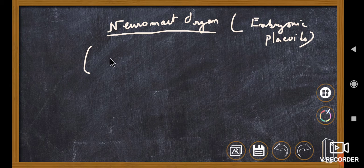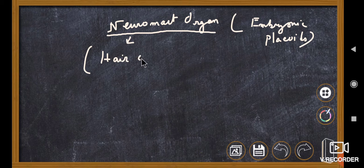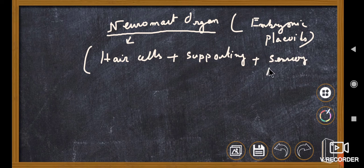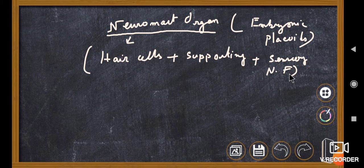Neuromast organs are actually a collection of some hair cells. They are composed of a number of hair cells. Hair cells are also accompanied by supporting cells — there will be some supporting cells. And along with some sensory nerve fibers, which catch and transmit signals. So a Neuromast organ is composed of: first, hair cells; second, some supporting cells; and third, sensory nerve fibers.